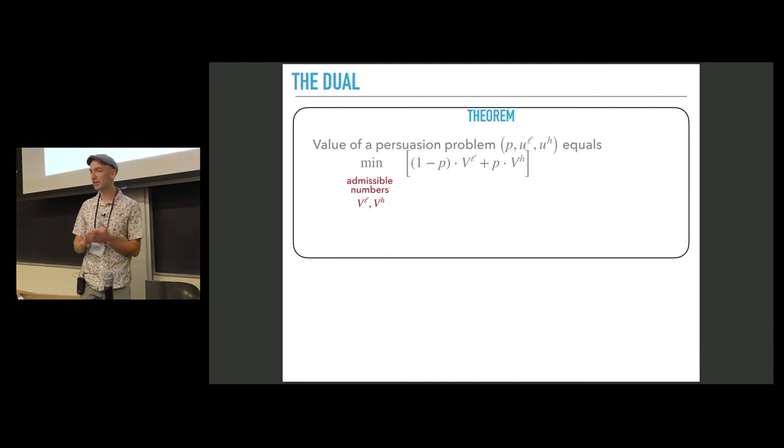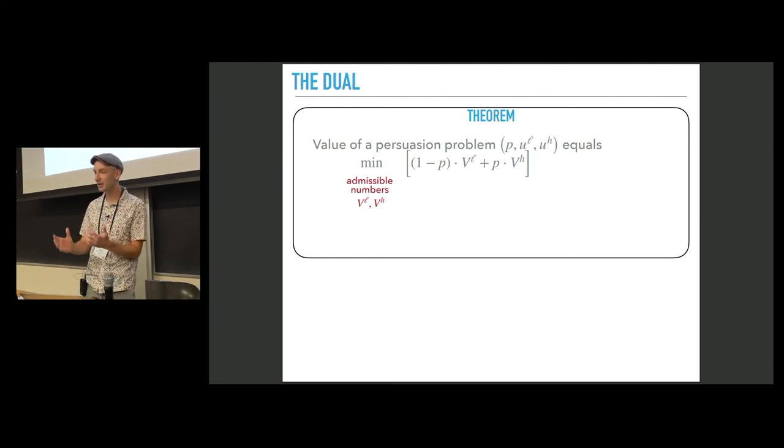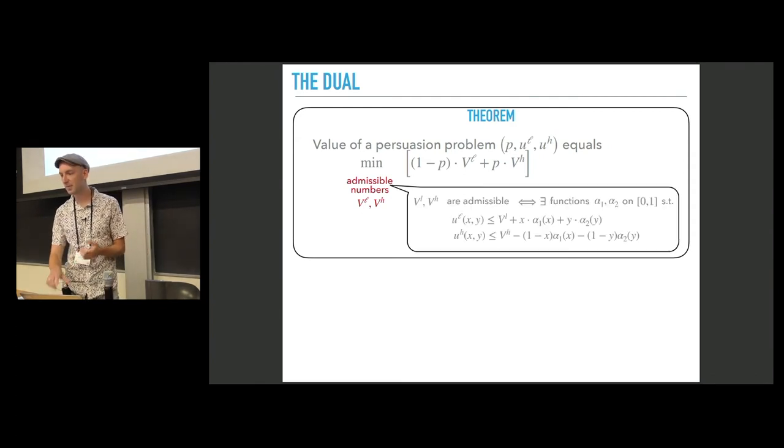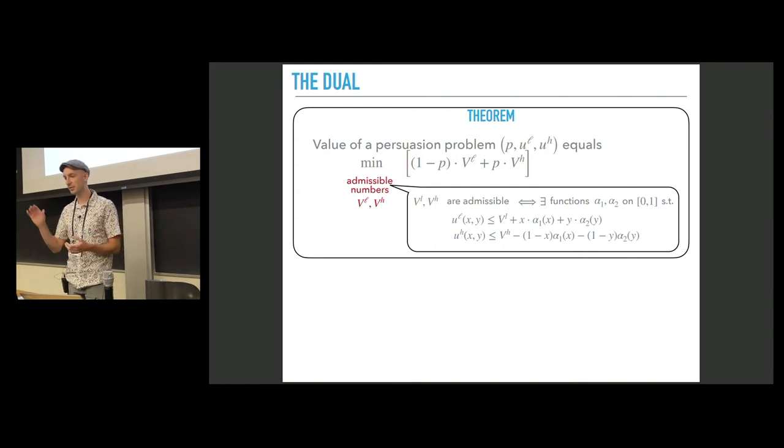So how the dual looks like. The objective is very simple. Currently we minimize the convex combination of two numbers, VL and VH. But of course the devil is in details and these two numbers must satisfy some admissibility constraints.